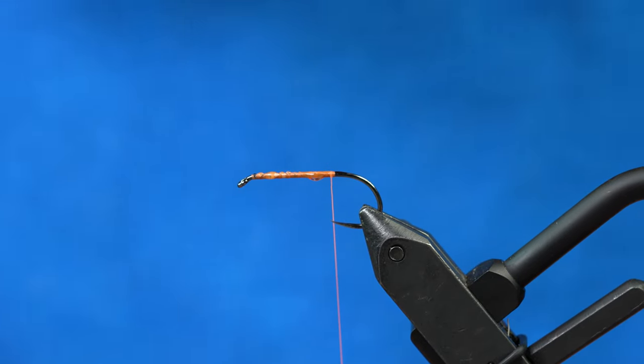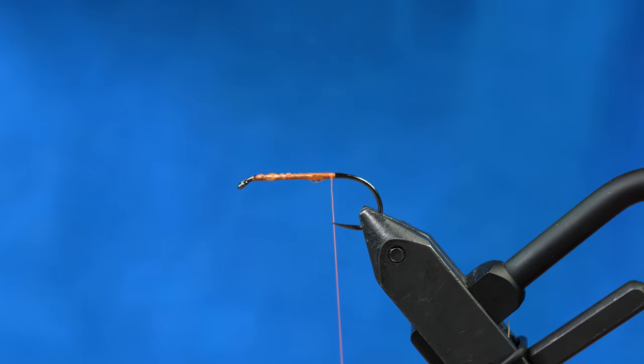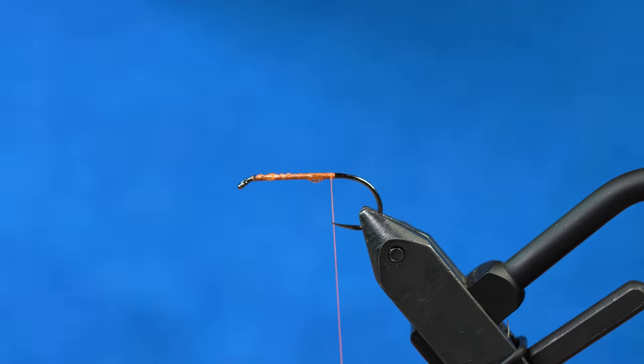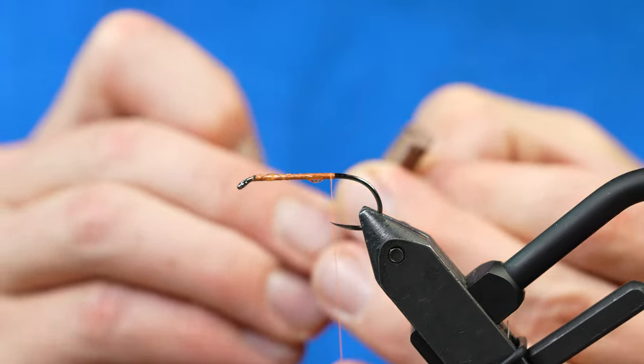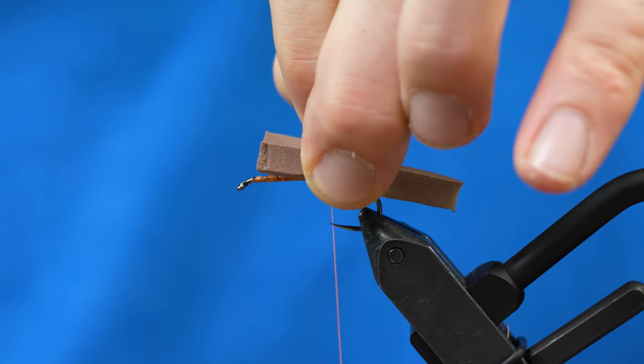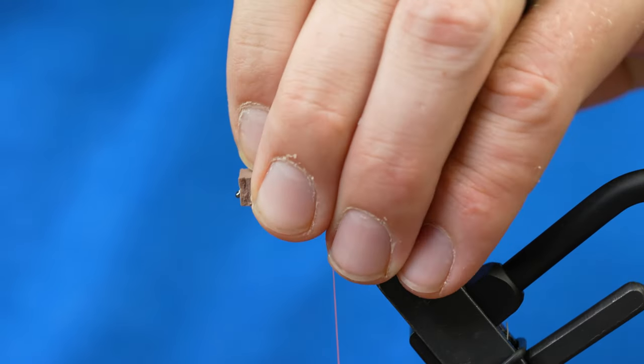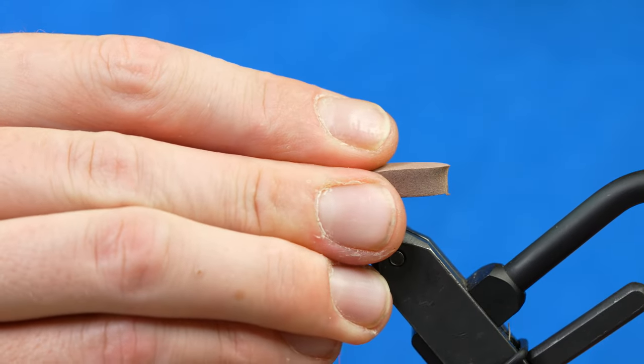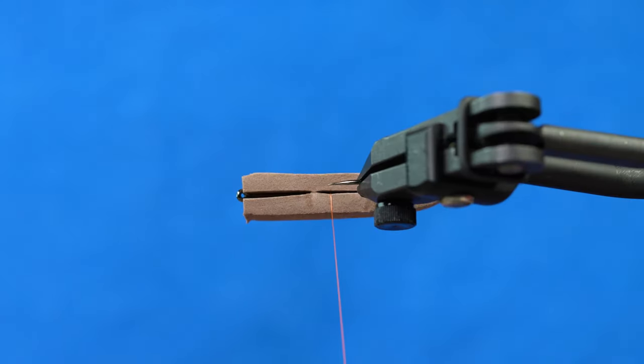I'm also going to take a razor blade and split the belly of that so we can get that securely fastened to the shank of the hook. Split that foam, get that guy centered on there, pinched around. Makes for a nice clean belly.